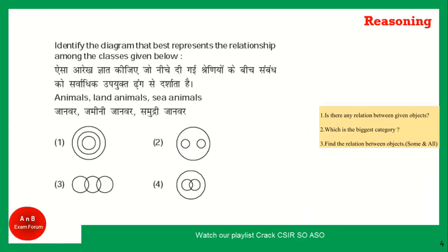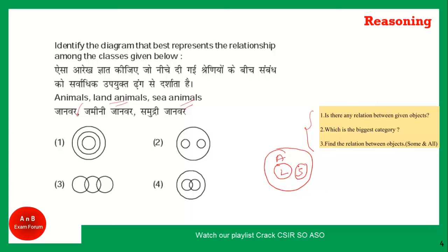The next is very important - animal, land animal and sea animal. Is there any relation between given objects? Yes, all three are animals. Animal is the biggest category, so we draw a circle for animal. Either it is land animal or sea animal, both are animals. Can a land animal be a sea animal? Yes - certain animals like amphibians can be both land and sea animals. So there will be an overlapping portion between land animal and sea animal within the animal circle. Option 4 is the correct answer.